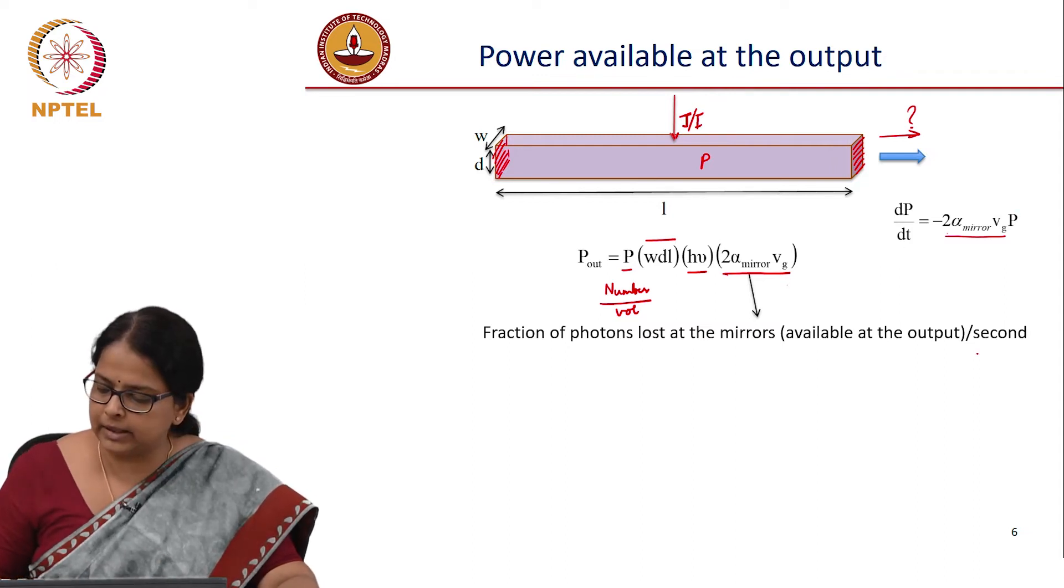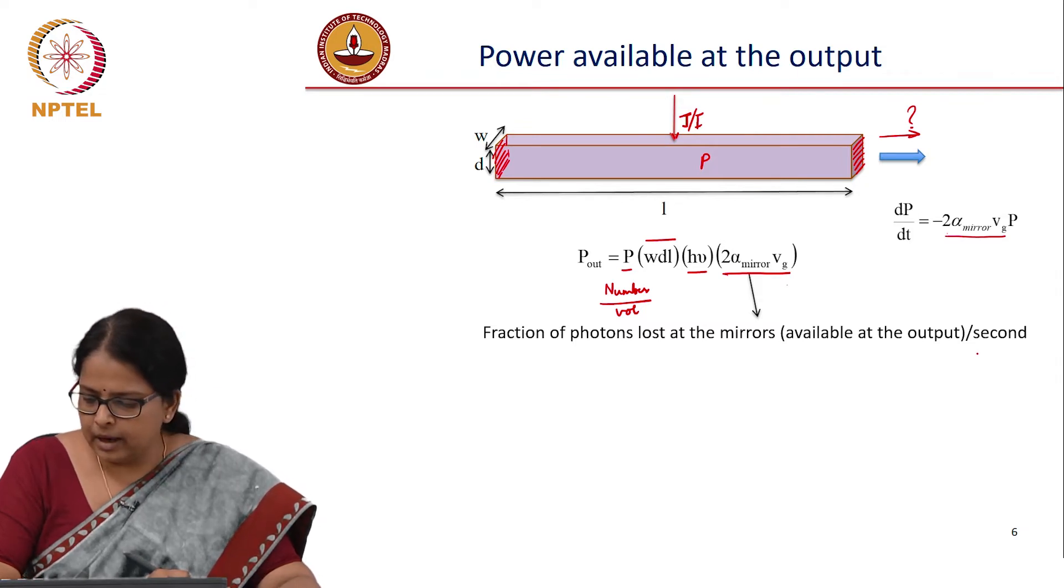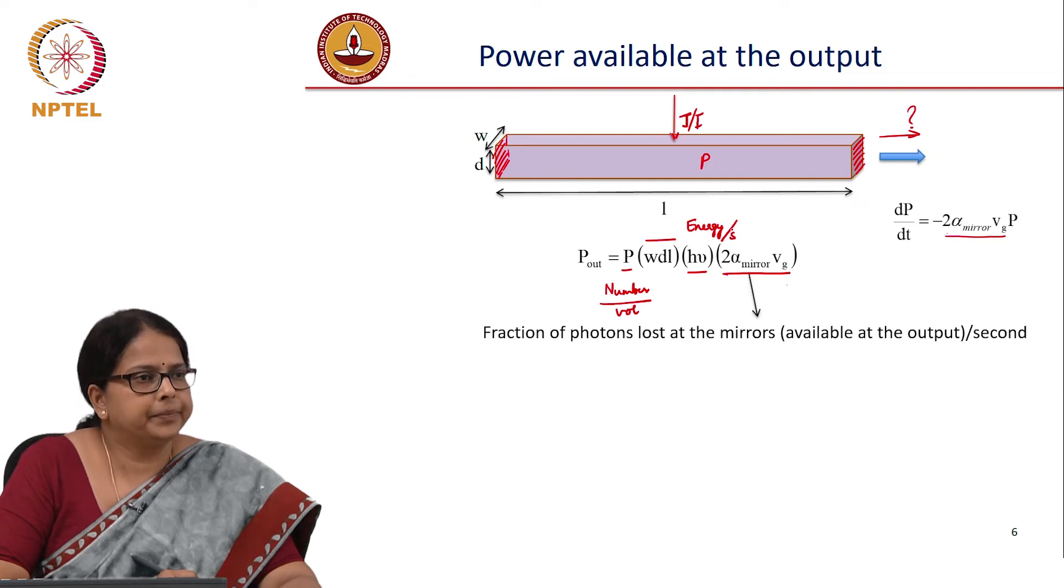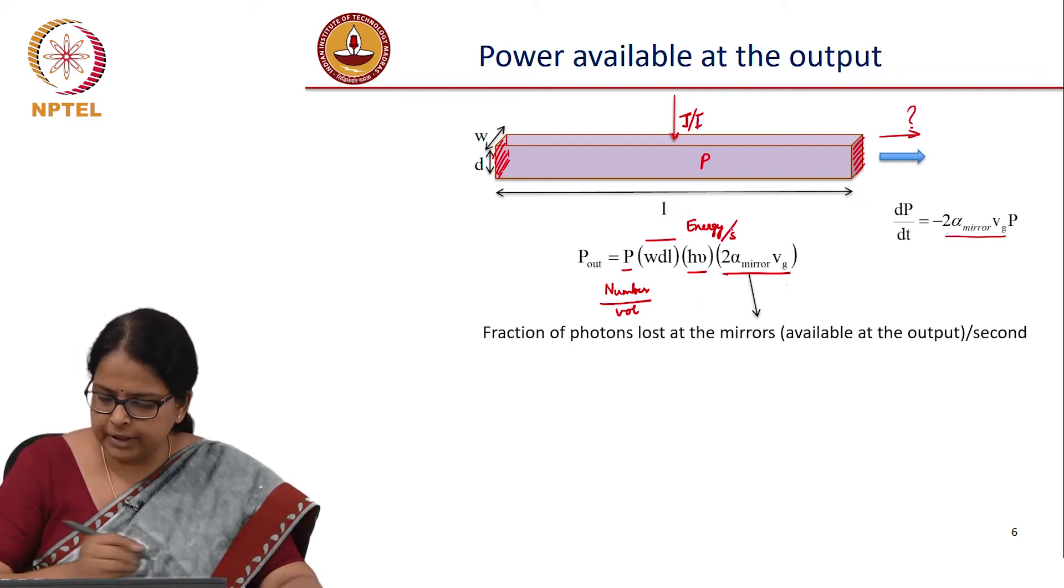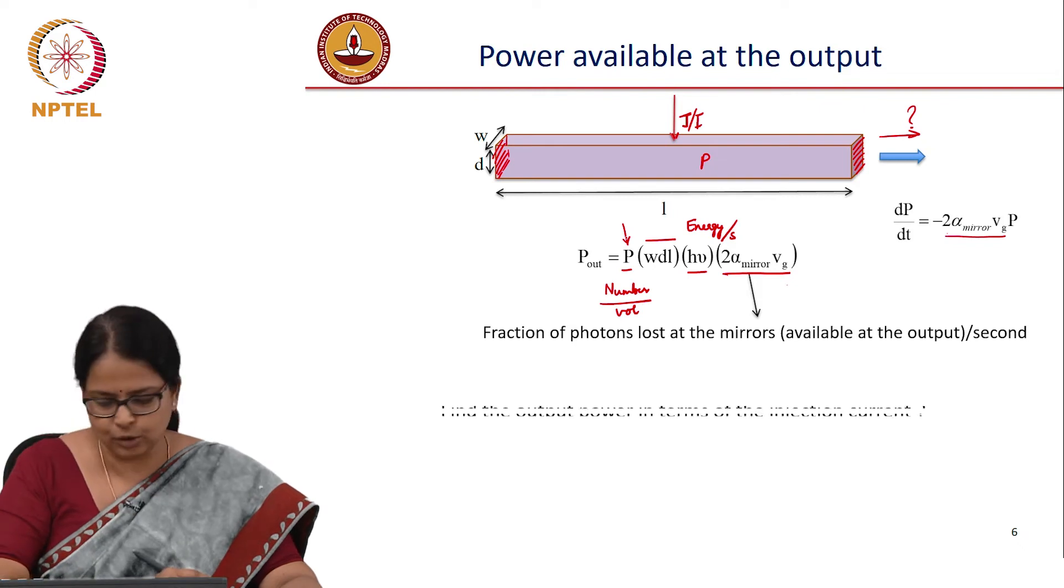2α_mirror V_g is what is per second because it came as dP by dt. So this is what is giving you that per second unit. And because there is a per second, this is energy and this is in per second, so that becomes power. But we still have to substitute this P, so we are going to substitute this P in terms of J, J_th and so on.